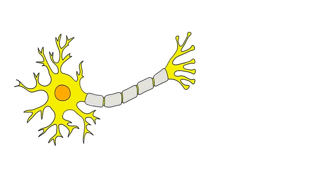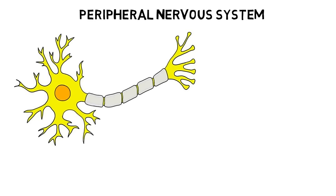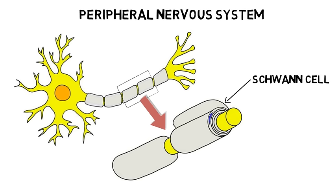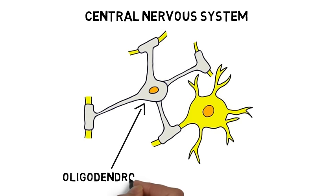Myelin is formed by glial cells, but the particular type of glial cell responsible for myelinating axons is different in the peripheral and central nervous systems. In the peripheral nervous system, glial cells called Schwann cells form myelin. Each Schwann cell wraps around one segment of an axon many times to form one internode. In the central nervous system, oligodendrocytes form myelin. One oligodendrocyte can produce dozens of internodes on multiple axons.